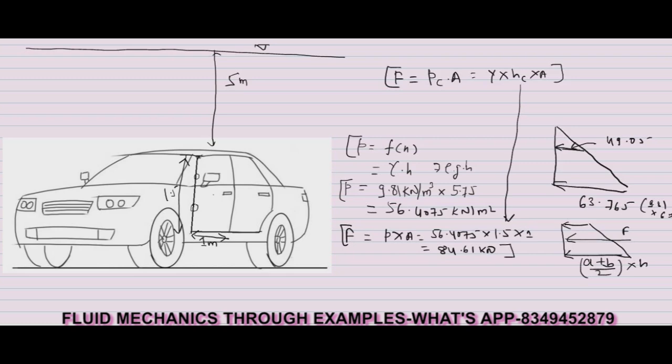Even at this point I am unable to say whether I will be able to open the door or not. So my next step is to calculate the moment generated about this hinge point by the hydrostatic pressure force. The moment generated by water at the hinge point would be 84.61 times the lever arm, which is 0.5 meters. This value comes to 42.3 kilonewton meter.